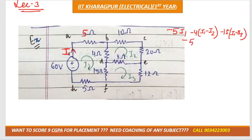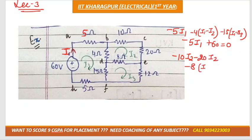Continuing the first mesh equation: minus 5·i1 plus 60 equals 0. The second mesh equation is: minus 10·i2 minus 20·i2 minus 8·(i2 minus i3) minus 4·(i2 minus i1) equals 0.